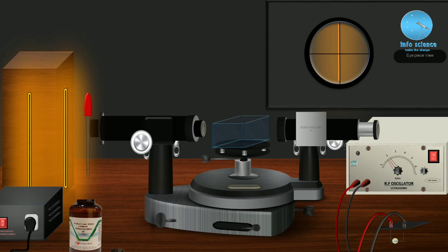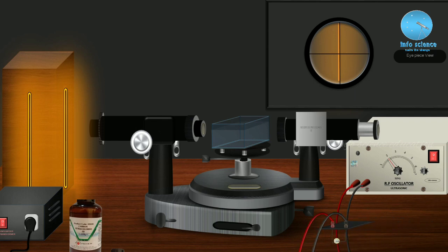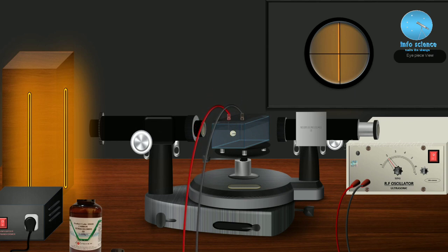Now we have transferred the CCl4 solution to the glass jar. We have to place the piezoelectric crystal into the glass jar for producing the ultrasonic waves, or acoustic grating. Always ensure that the piezoelectric crystal is directly dipped into the organic solution. If it is not properly immersed, there will be no acoustic gratings formed, which will affect the experiment. Always ensure the piezoelectric crystal is completely immersed in the organic compound filled in the glass jar.